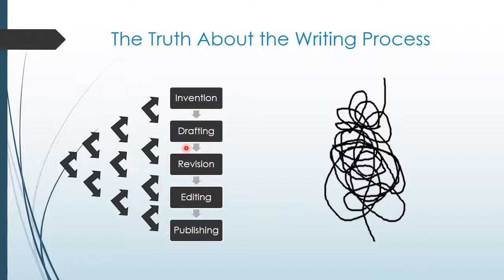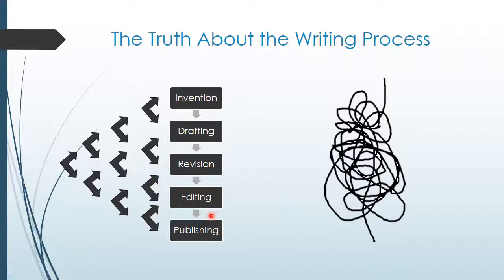You might move between any of those stages, or you might even go from publishing back to invention — it happens all the time. You've published something, someone says 'that's great, now turn it into something else.' So you can enter the writing process at any point, come out at any point, and go back in at any point. It really is a messy tangle, but it's important to be able to talk about these different stages so we can understand the different things we do while composing.